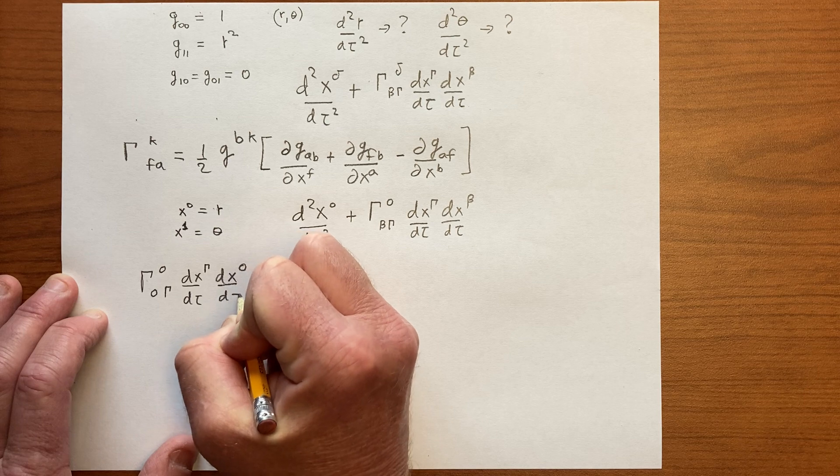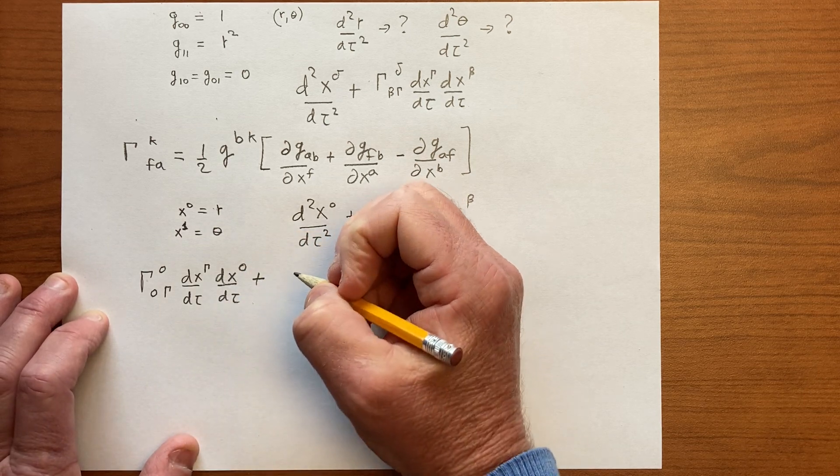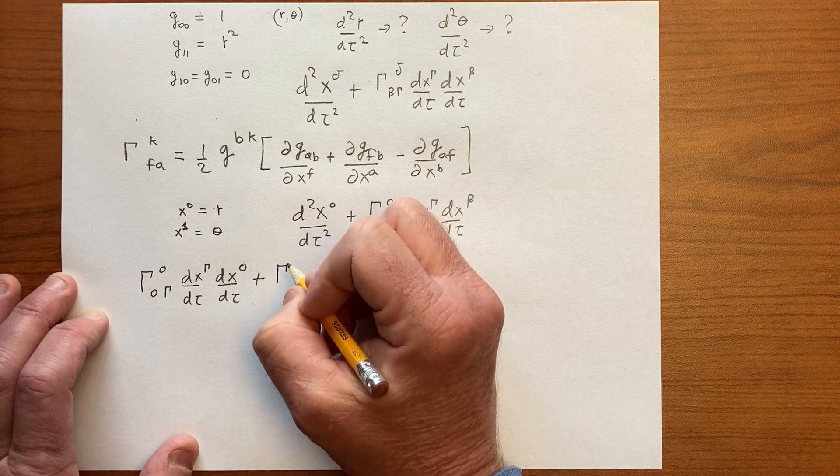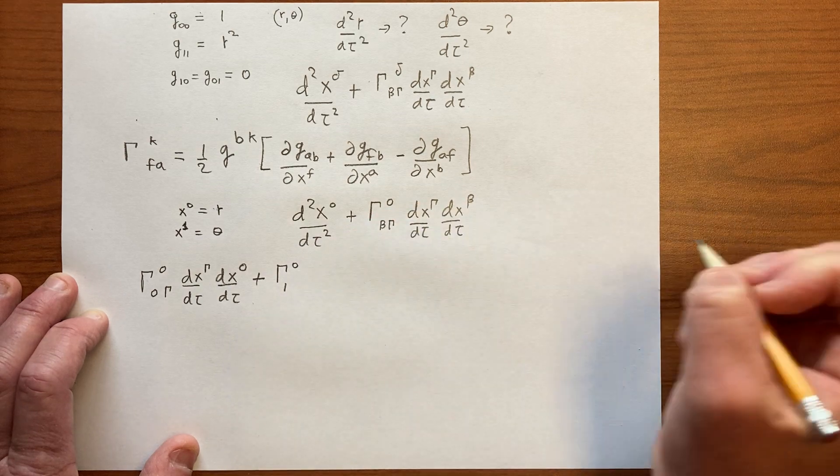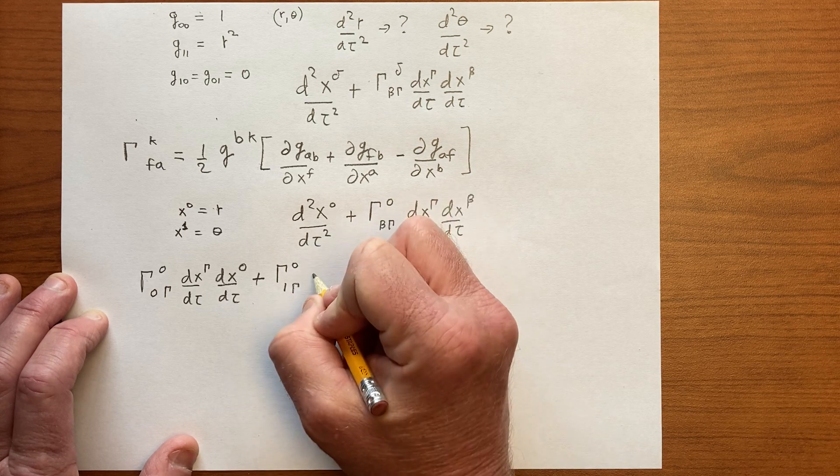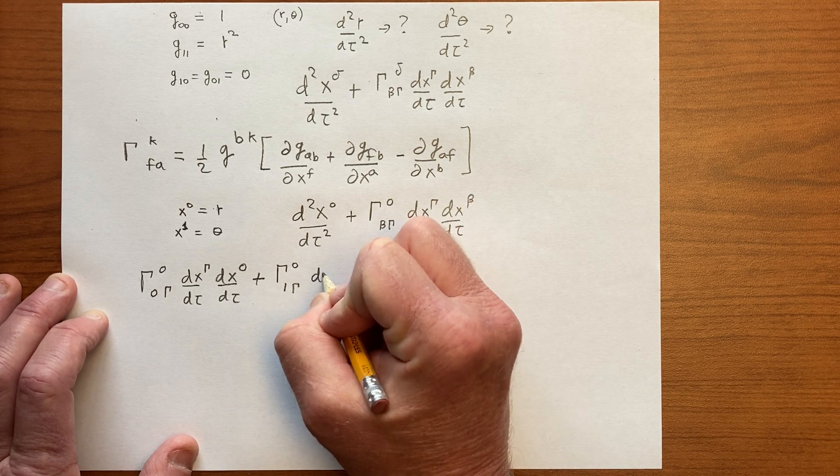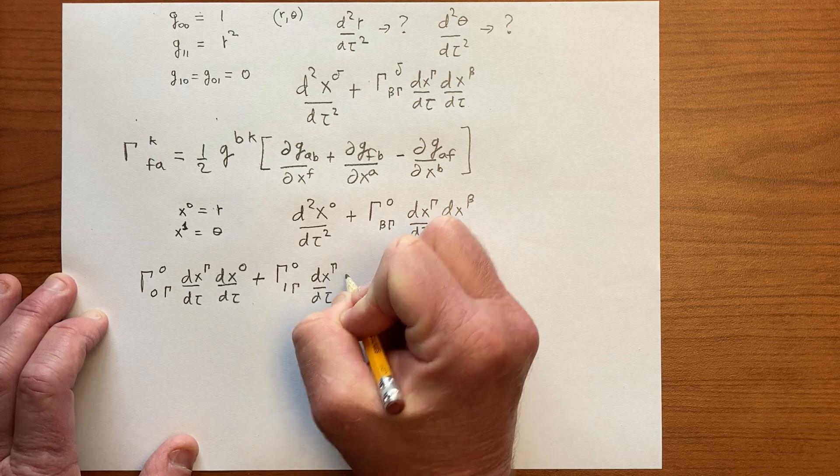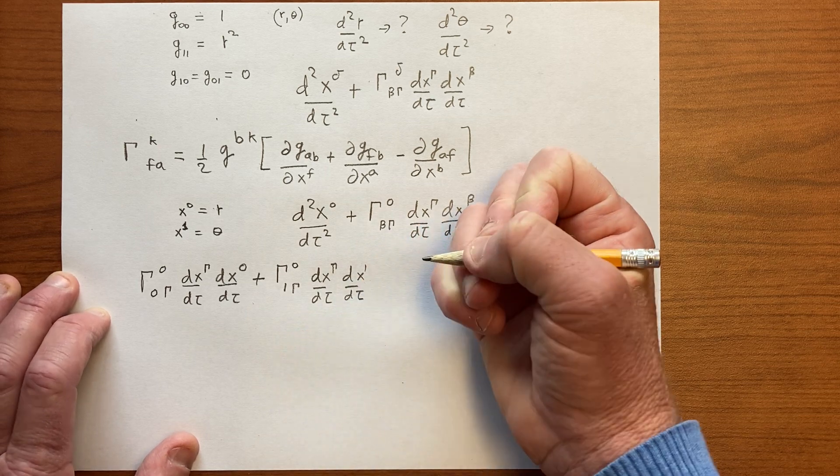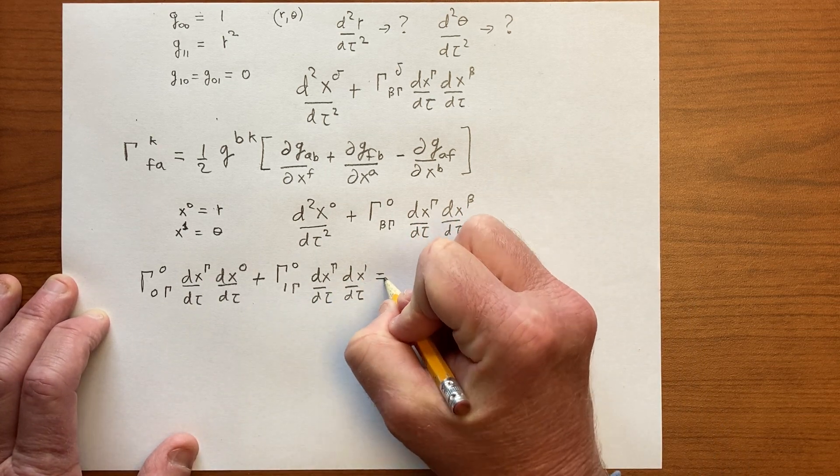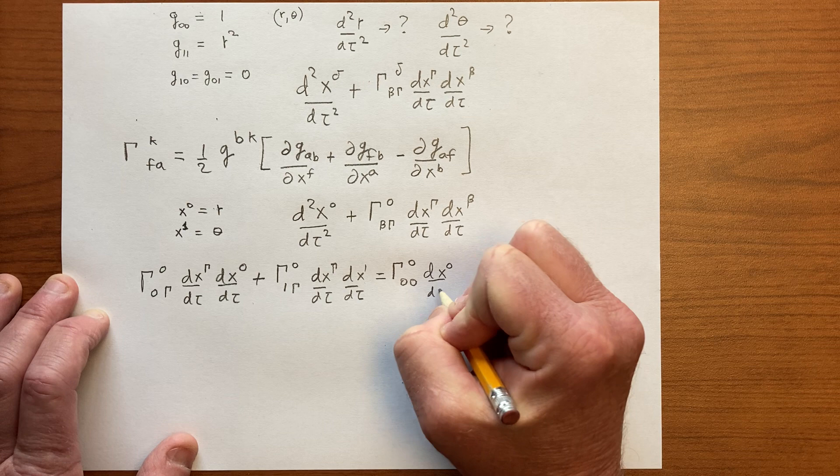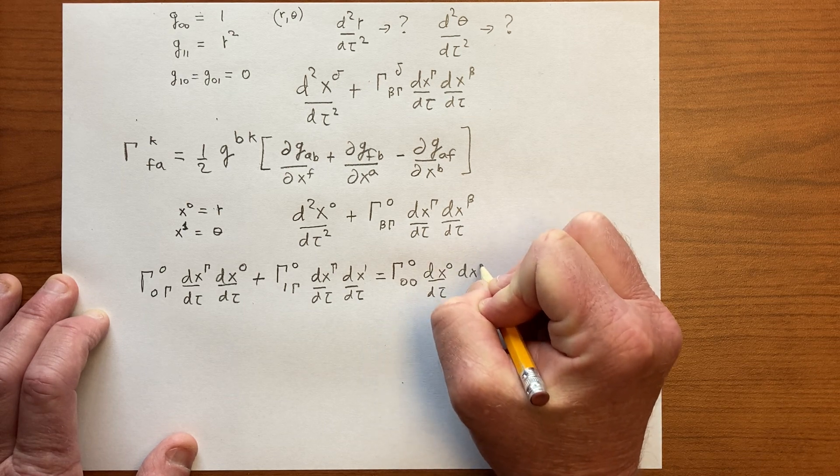We have 0, and then we'll start to sum on beta, 0 and 1. So we have Γ^0_0γ dx^γ/dτ dx^0/dτ plus Γ^0_1γ, and gamma still goes along for the ride, dx^γ/dτ dx^1/dτ.